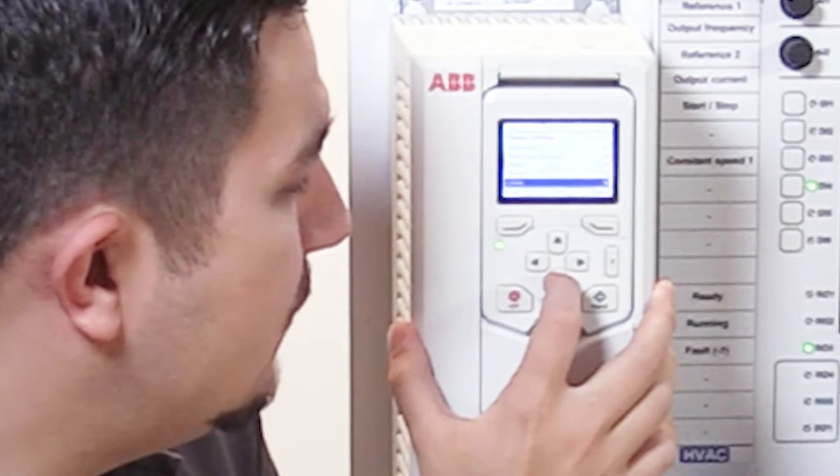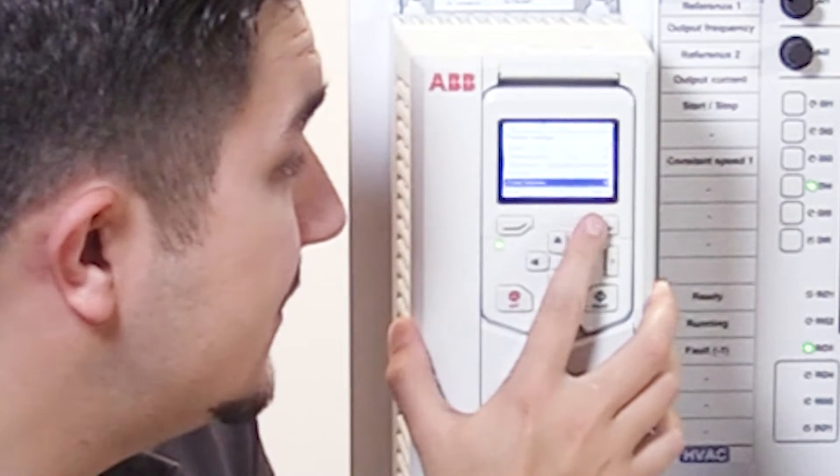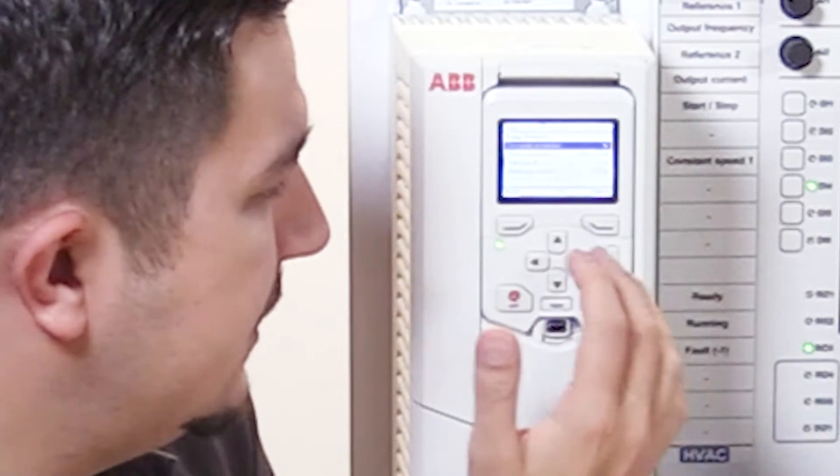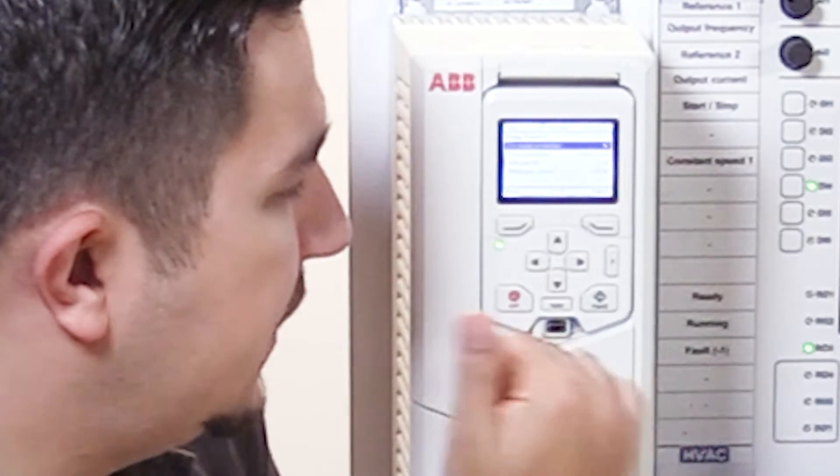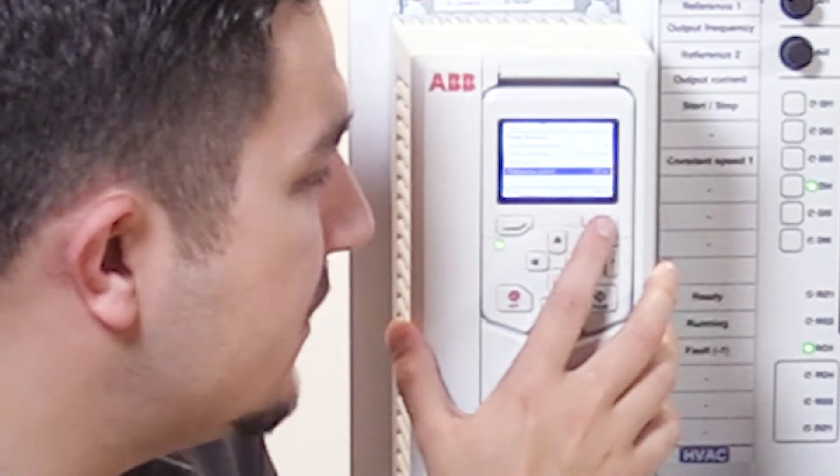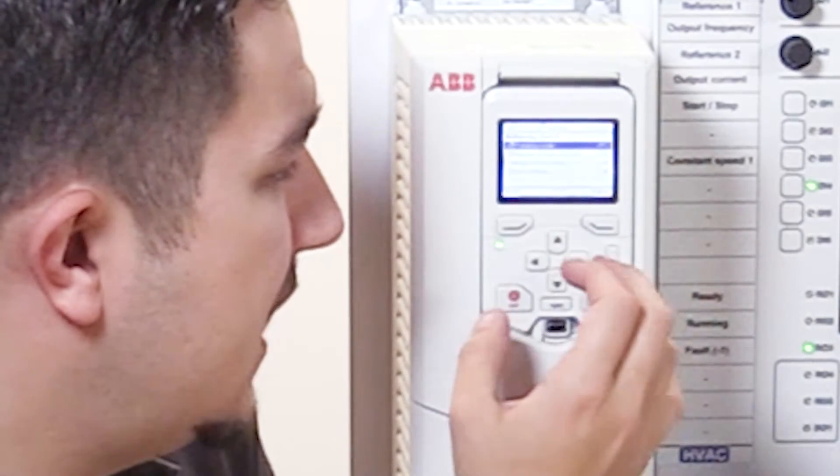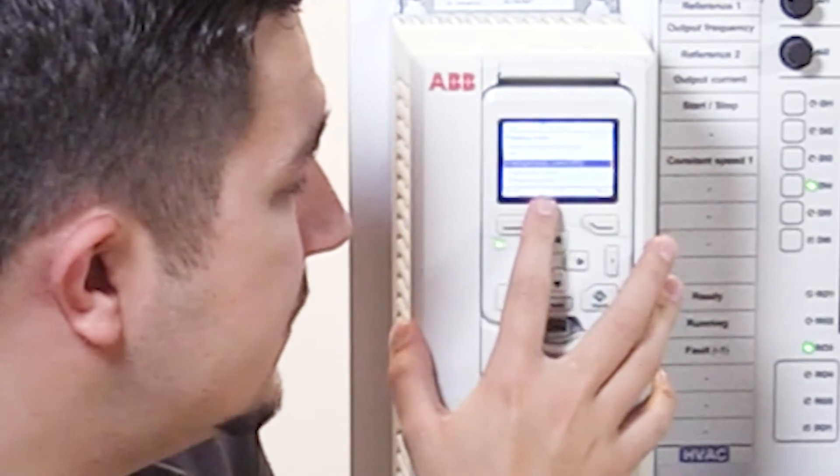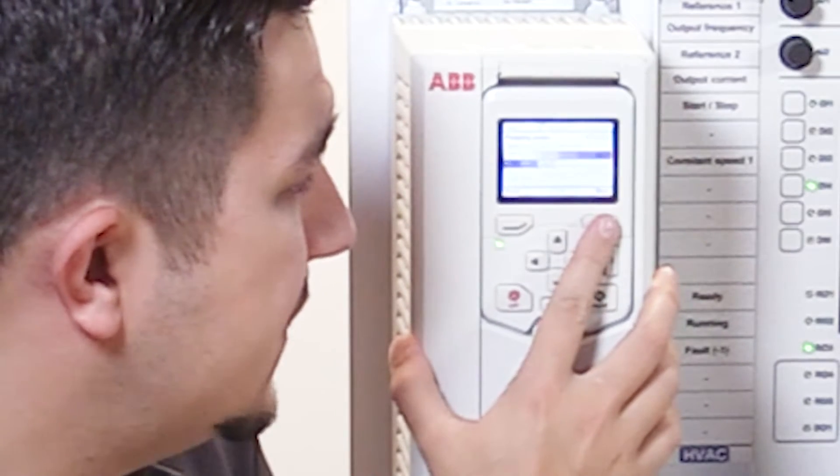Within there, we then go down and we're looking for our pump settings or pump features. We select that. You can see there already we've got a couple of handy pump features such as dry pump protection, flow calculation and soft pipe fill. But the key one we're looking for is this multi-pump control. Going down to there, we go on to select. As default, when you first set up this up for the first time, it'll have pumping mode is off. So what we need to do is select intelligent pump control or IPC. Once we've selected that, we go on to next.